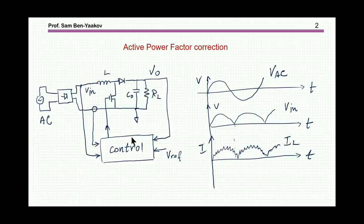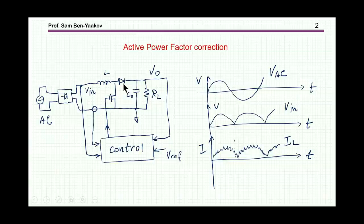Active Power Factor Correction is required to comply with the standard concerning the line harmonics. Typically we have the line, we have a rectifier, then we have a boost stage with a switch, inductor and diode, then the output stage — this represents the load — and then we have a controller.